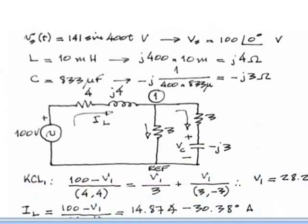And the capacitor also is represented by its impedance, which is negative j 1 over omega C, omega 400 radians per second, and the impedance of the capacitor is negative j 3 ohms. Like so.